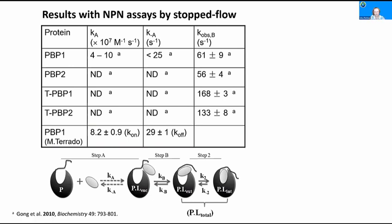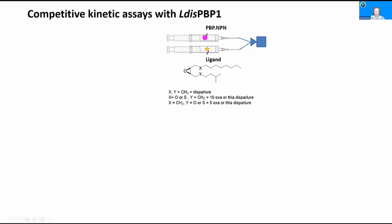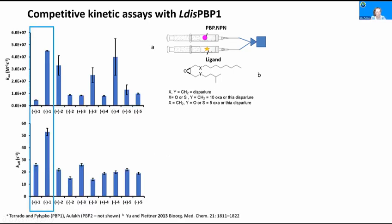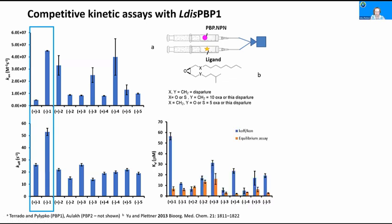Mila Torado recently obtained very similar numbers for this very rapid step, trying to do displacement experiments where she displaced with a non-labeled ligand the NPN from the PBP and measured the kinetics. We then focused on the results with the pheromone itself. For PBP1, minus-disparlure — the preferred ligand — bound faster than plus-disparlure. It also came off faster. So overall, the preferred ligand was on and off faster than the less preferred one. In this type of experiment, we're focusing on external binding, so the enantioselectivity at the external site really comes to the forefront.